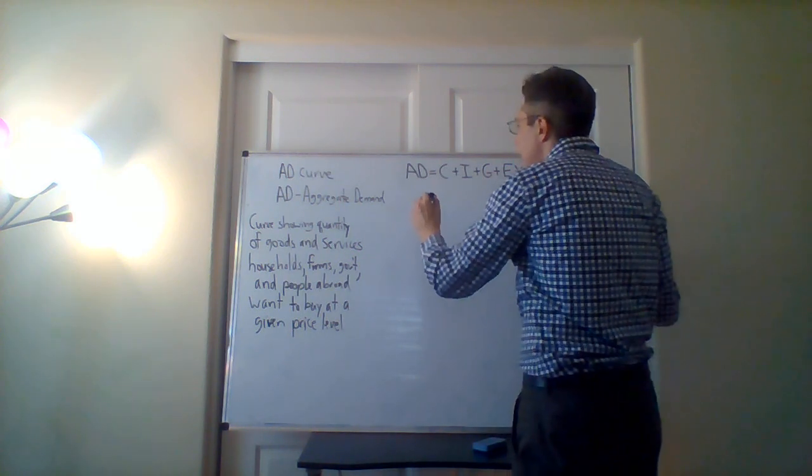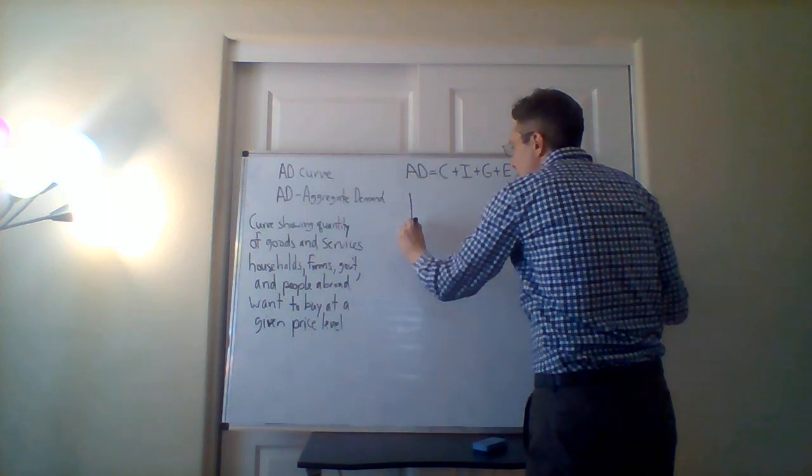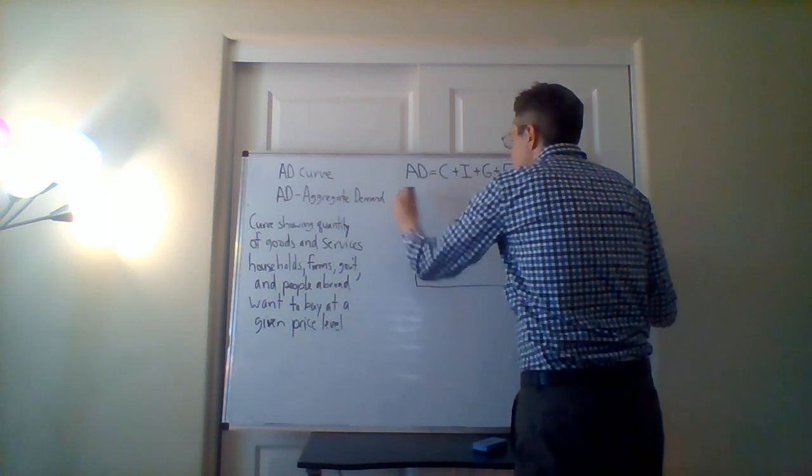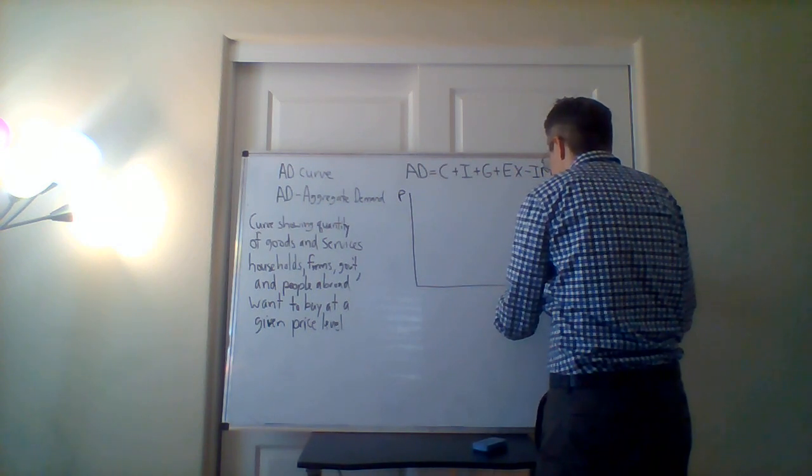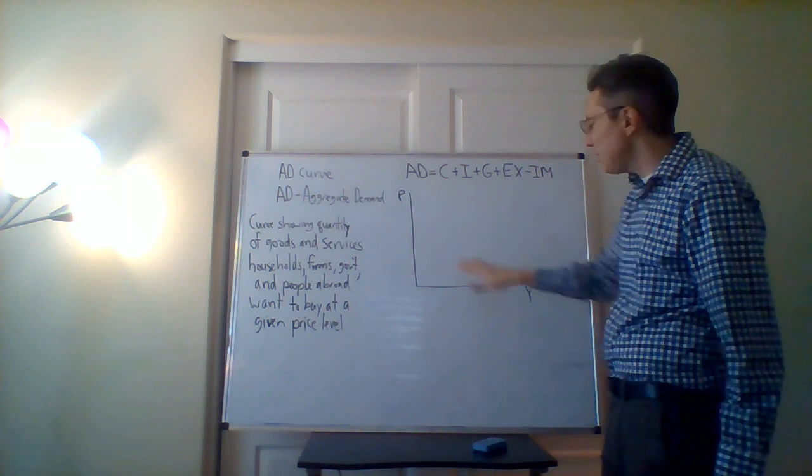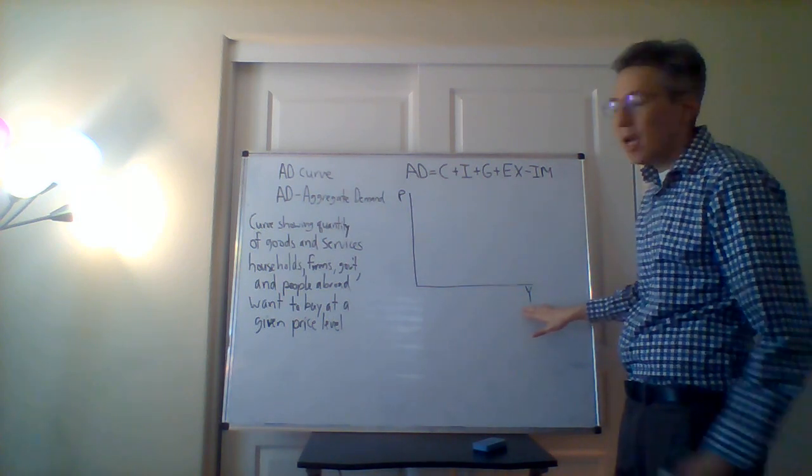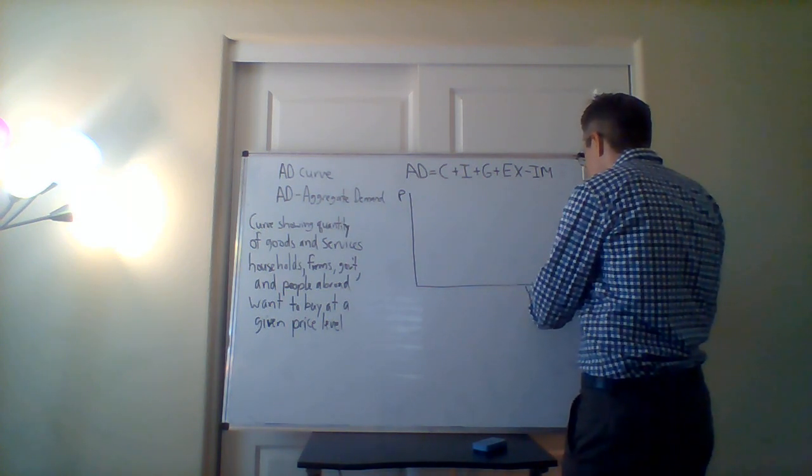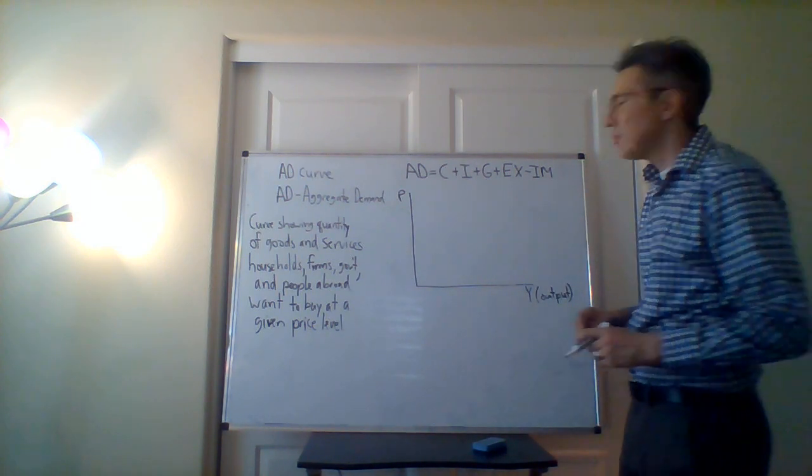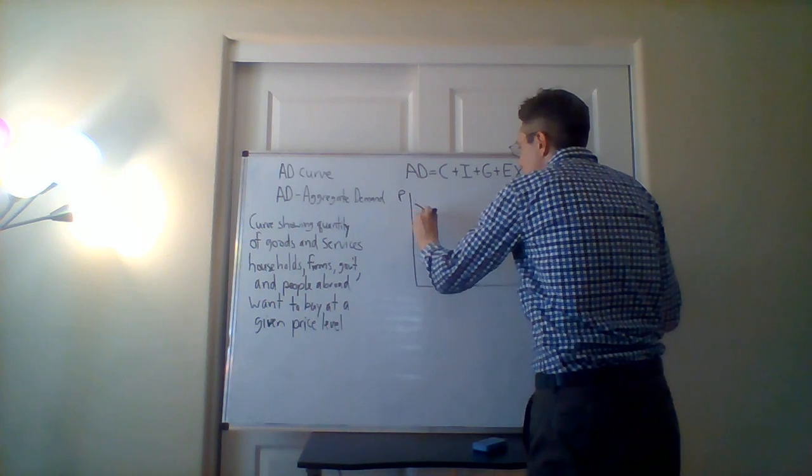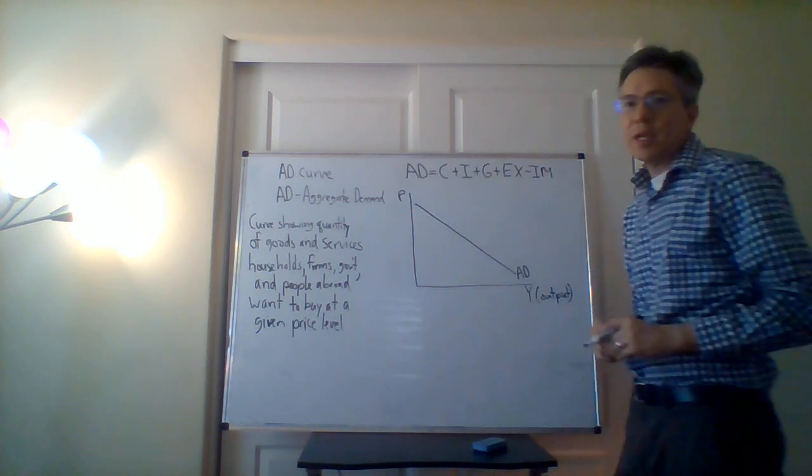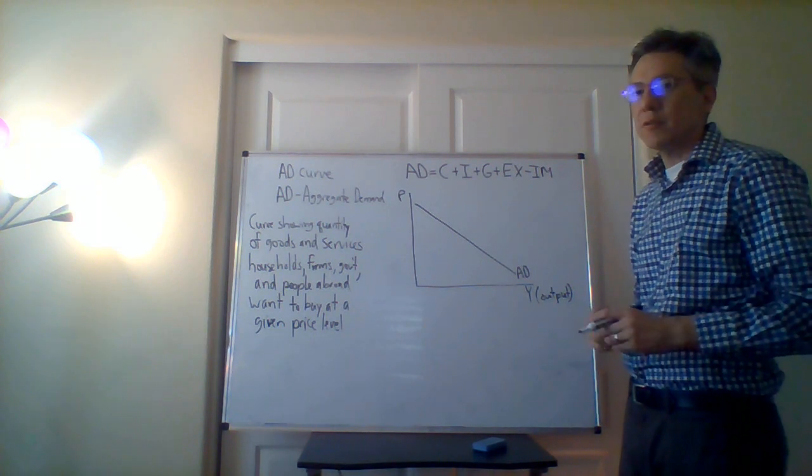And so what does the curve look like? It looks like this. So we have first P representing the price level and Y representing output. And so what is the shape of the curve? It basically looks like this. So we have our AD curve.